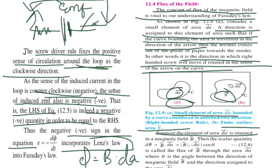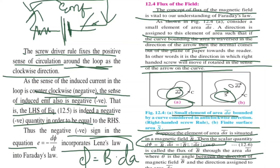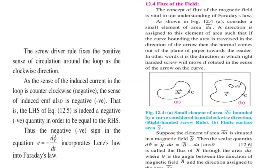In figure (a), a small element of area dA bounded by a curve in the anti-clockwise direction, and in figure (b) a finite surface area is determined using the right-hand screw rule. If an element of area dA is situated in a magnetic field, the flux is the scalar quantity given by φ = B · dA = |B||dA|cosθ, where θ is the angle between the direction of magnetic field and the direction assigned to that area dA.